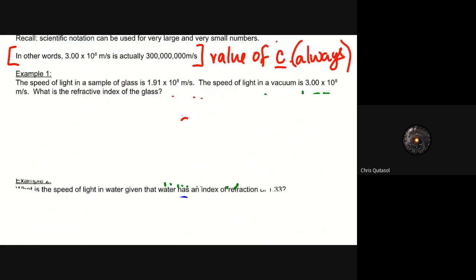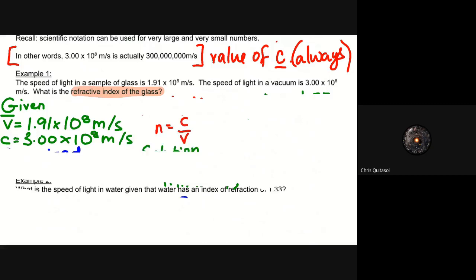So let's take a look at this example question and let's see how we do, shall we? So the speed of light in a sample of glass is 1.91 times 10 to the 8 exponent meters per second. The speed of light in a vacuum is 3.0 times 10 to the exponent of 8 meters per second. What is the refractive index of the glass? So we're looking for that index of refraction, that n value. And we've been given the speed of light in that sample of glass as 1.91 times 10 to the exponent of 8 meters per second. As well as that constant of the speed of light in a vacuum, 3.0 times 10 to the 8 meters per second.